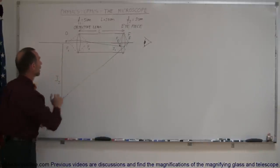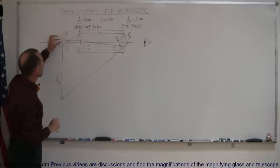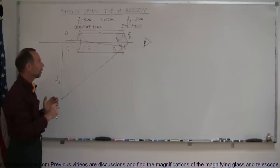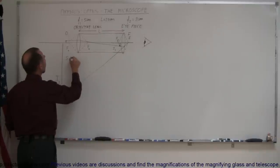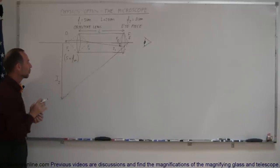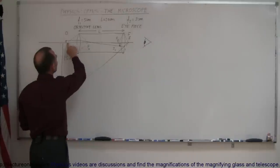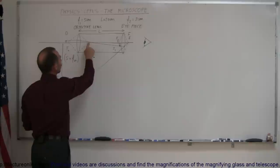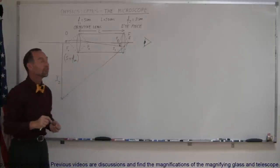Let's say we're looking at a very small object here. You typically put the object just in front of the focal point of the first lens. As a starting point, we're going to place it such that S is equal to the focal length of the objective, and then later on we'll find the actual place where the object needs to be. A ray coming through parallel to the optical axis bends, goes to the focal point on the other side, and forms an image just inside the focal point of the eyepiece.